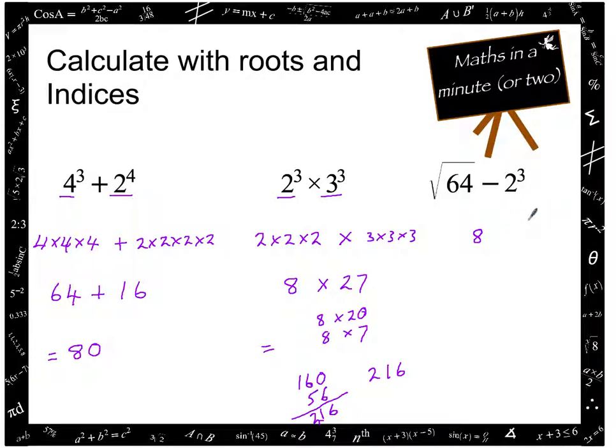And then we're going to do 2 cubed. 2 cubed means 2 times 2 times 2. 2 times 2 is 4 and 4 times 2 is 8. So we actually have 8 minus 8 here which actually gives us zero. And that's it.